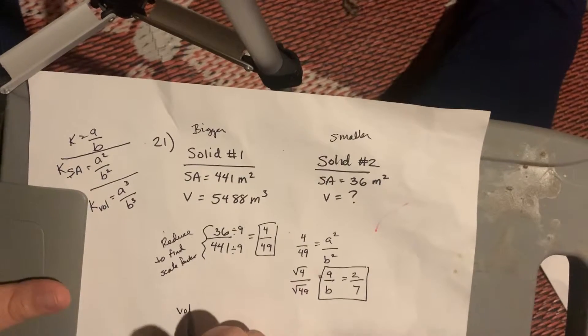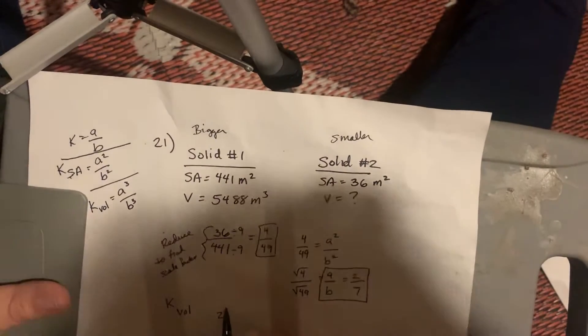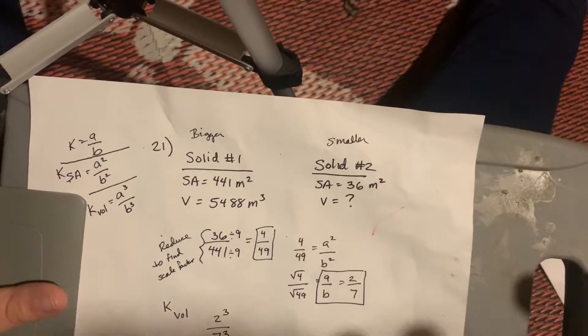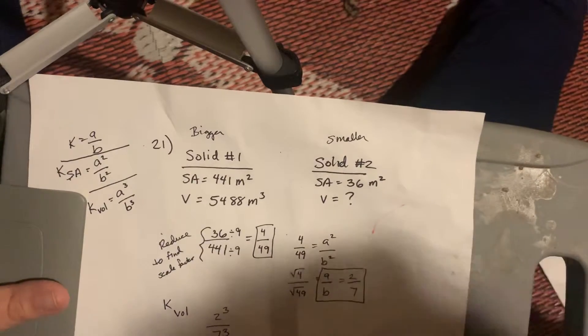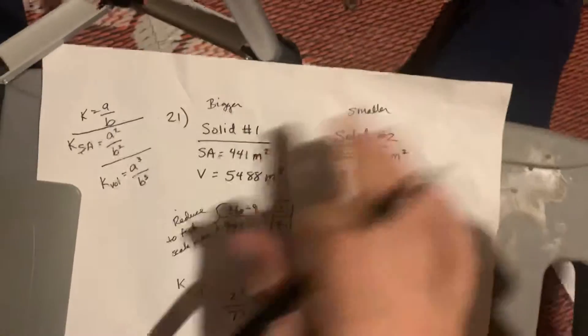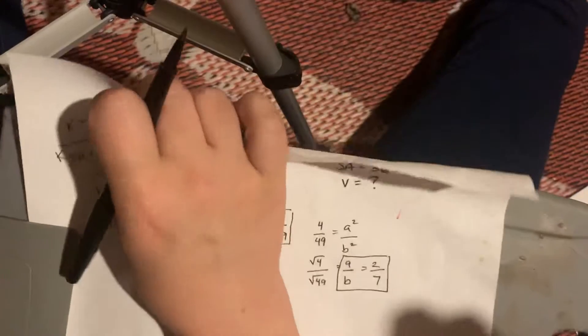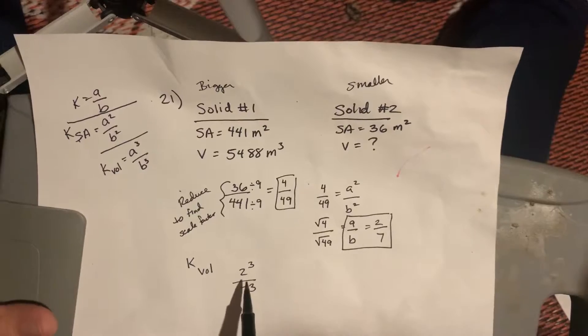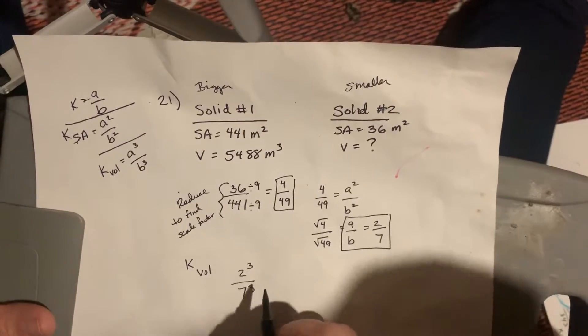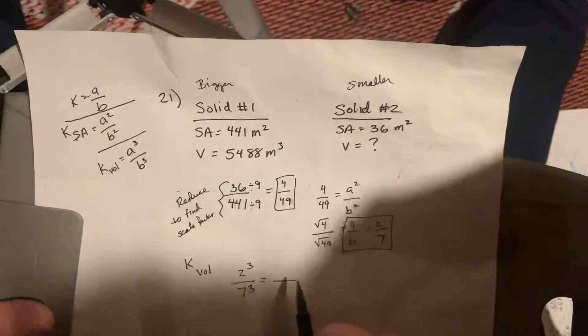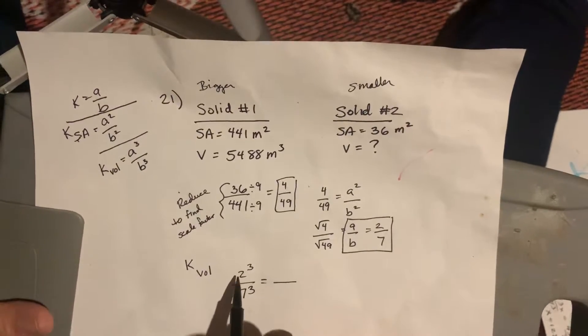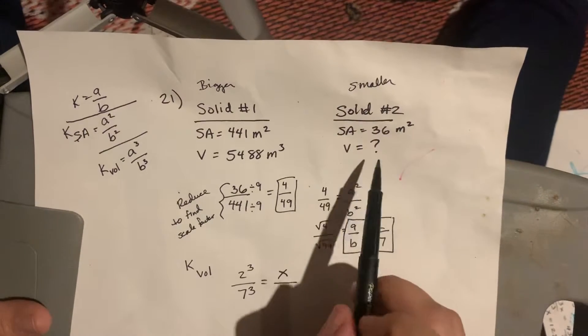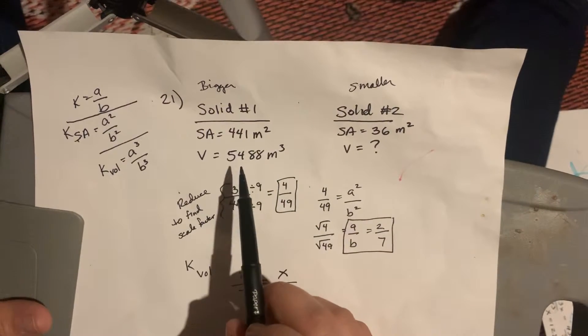To find the volume, I'm going to need to do 2 to the 3rd over 7 to the 3rd. So, this scale factor for volume says if I do 2 to the 3rd over 7 to the 3rd, I can make that equal to my volumes. I'm going to put the smaller volume over the larger volume because I have the smaller number on top. So, I don't know the smaller volume. That's my X. But, I know my larger volume is 5488.